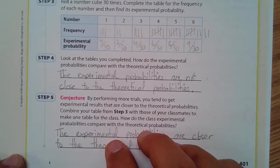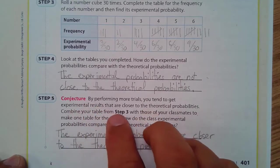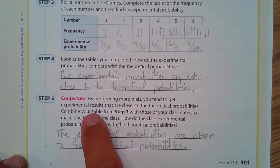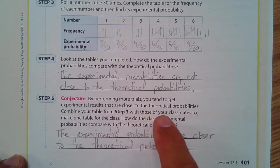A conjecture. By performing more trials, you tend to get the experimental results are closer to the theoretical probabilities.